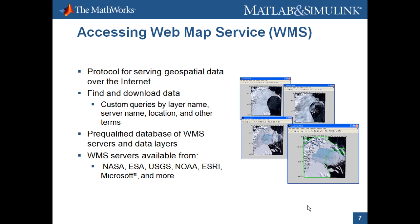WMS is new functionality that came out in R2009b. It's a protocol developed by the Open Geospatial Consortium for serving rendered maps over the internet. Organizations such as NASA, USGS, and NOAA provide WMS servers and data layers to the public. On the right we have an example data layer of the Larsen Ice Shelf and its collapse over a few months — an animated data layer. There's a wide range of data available through WMS, from air pollution to sea temperature to natural resources. Mapping Toolbox provides a pre-qualified database of WMS servers, plus search functionality to help you narrow down what you're looking for.